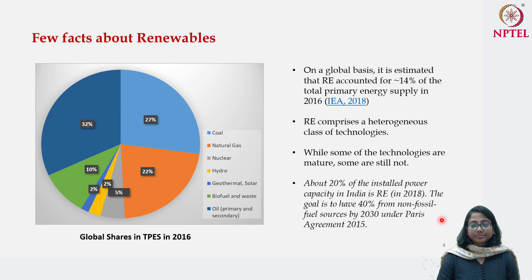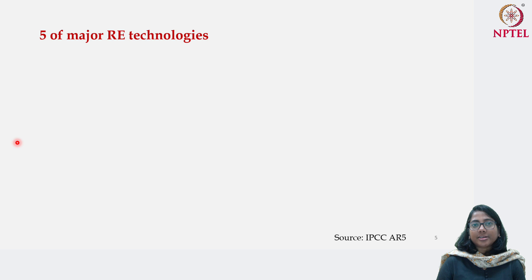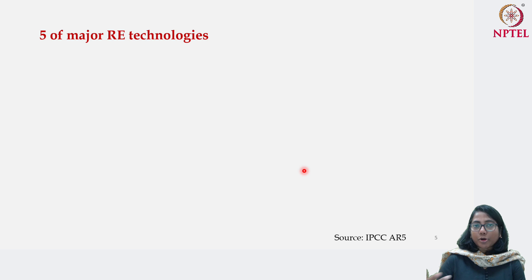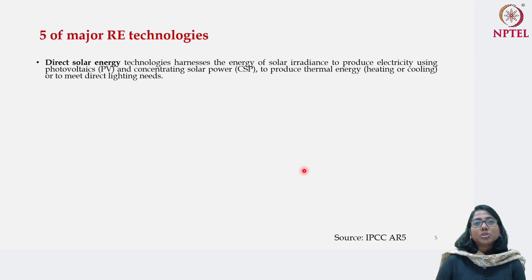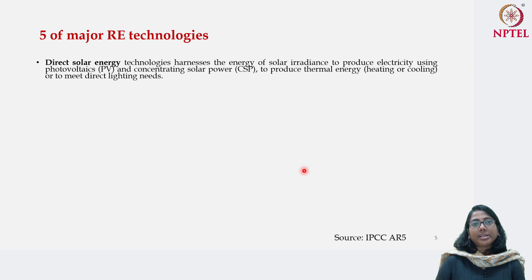As we have discussed, there are multiple technologies available to harness renewable energy. Here we are going to discuss five major renewable energy technologies. If you want to know more, you can visit the fifth assessment report of the Intergovernmental Panel on Climate Change. Starting with solar energy: direct solar energy technologies harness the energy of solar irradiance to produce electricity using two different technologies — photovoltaics (PV) and concentrating solar power (CSP). This energy is used to produce thermal energy for heating and cooling purposes, or directly to meet lighting demand.